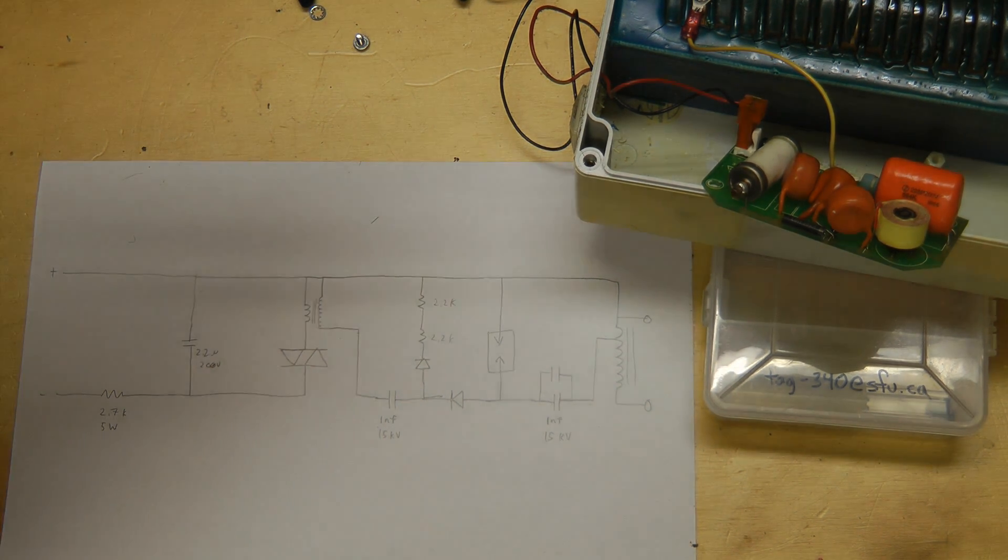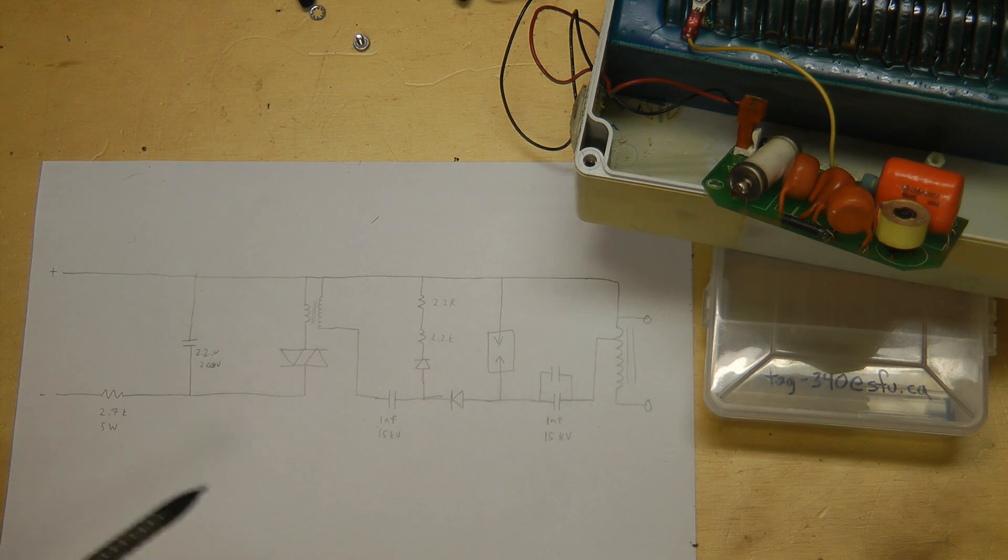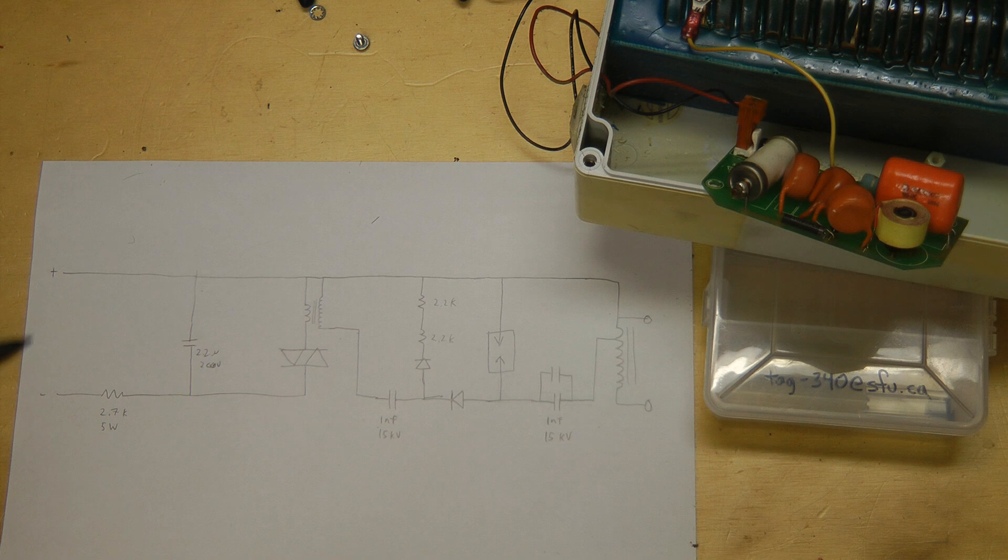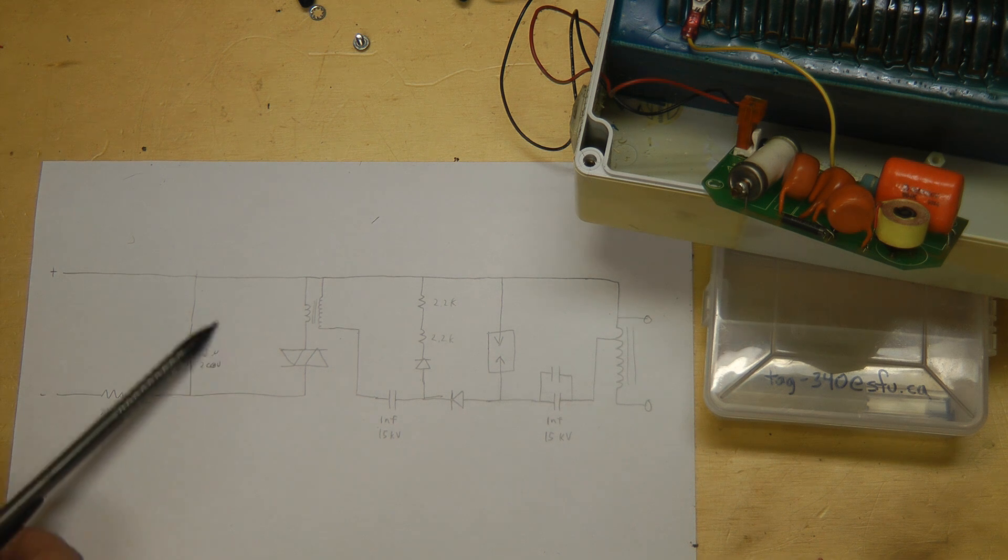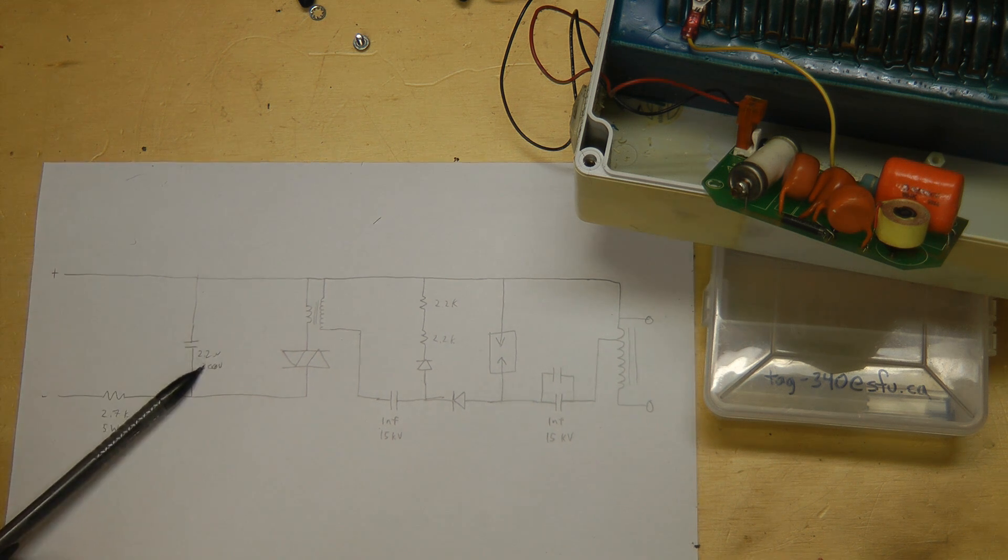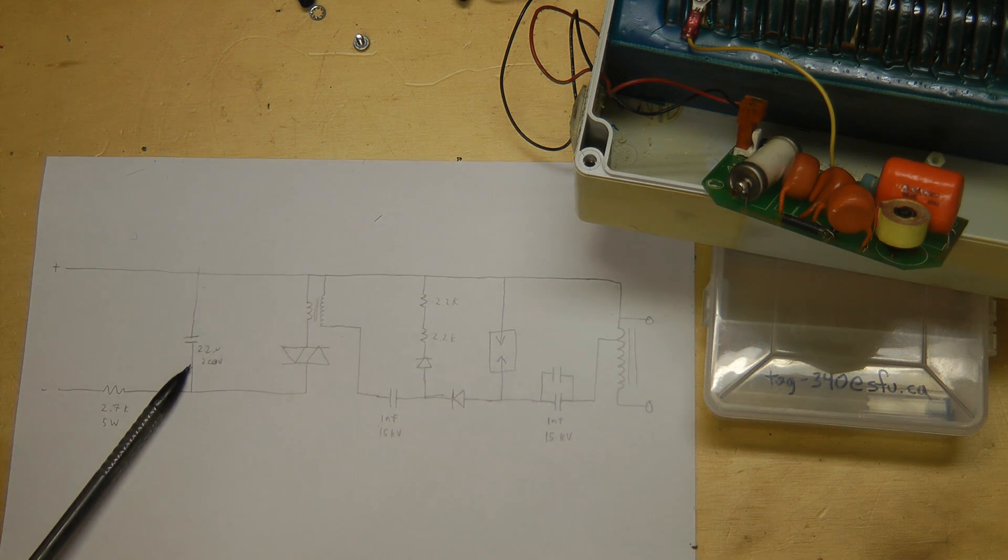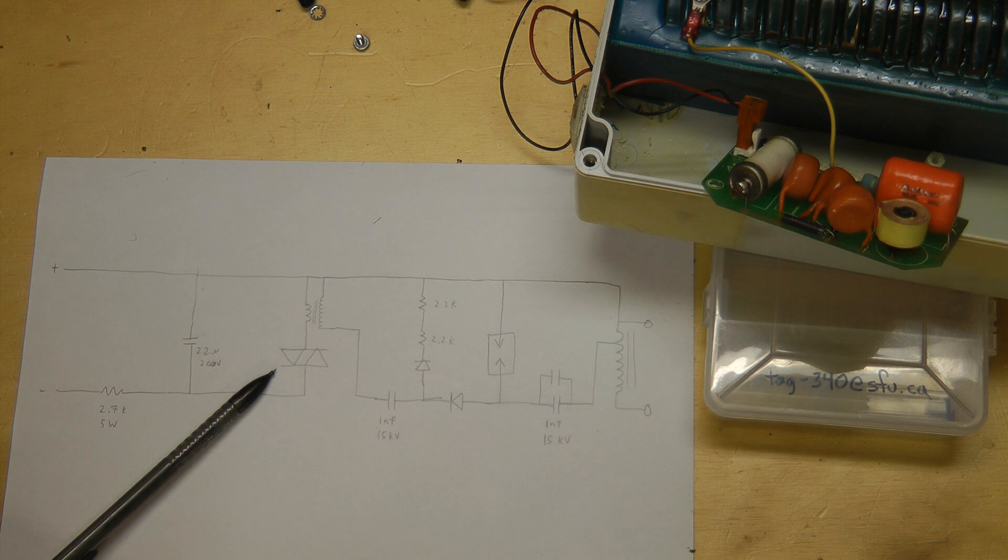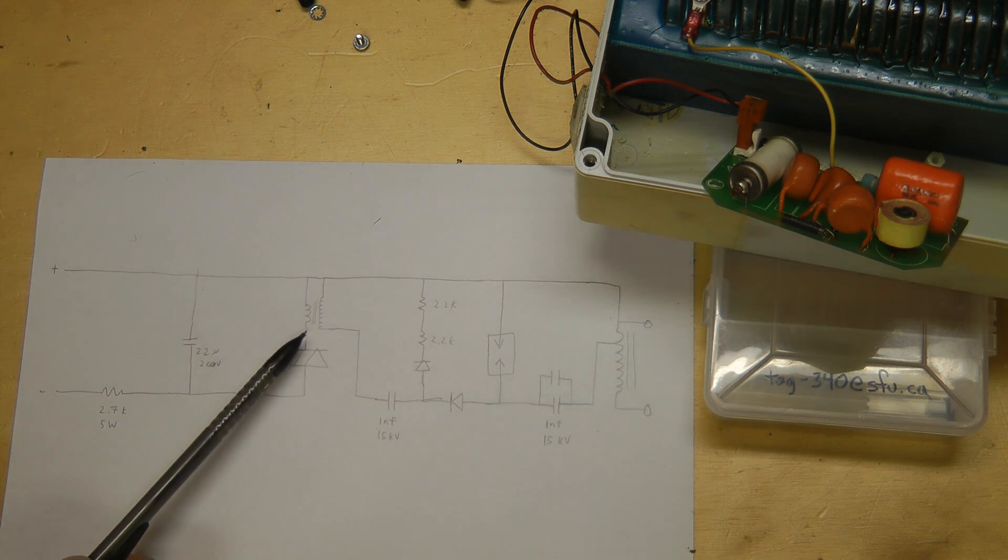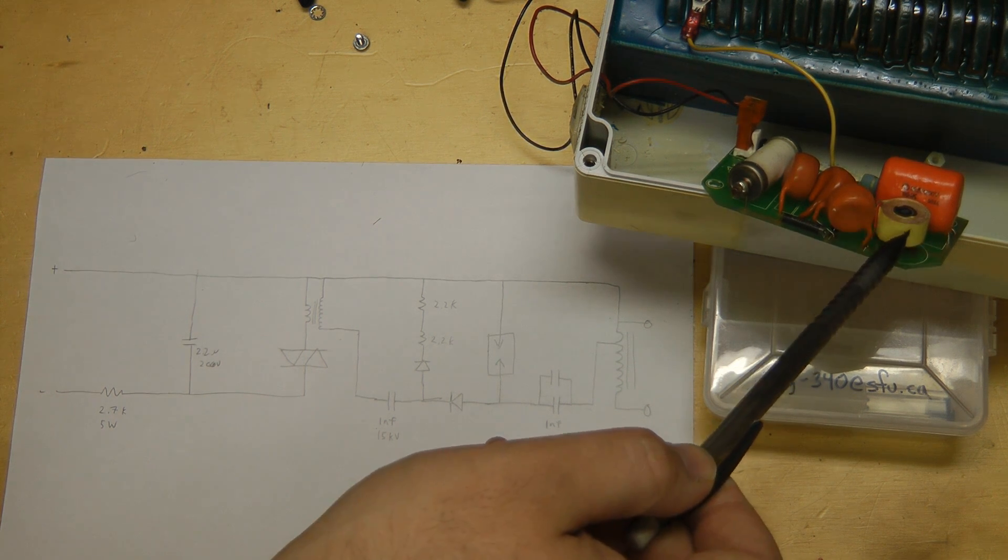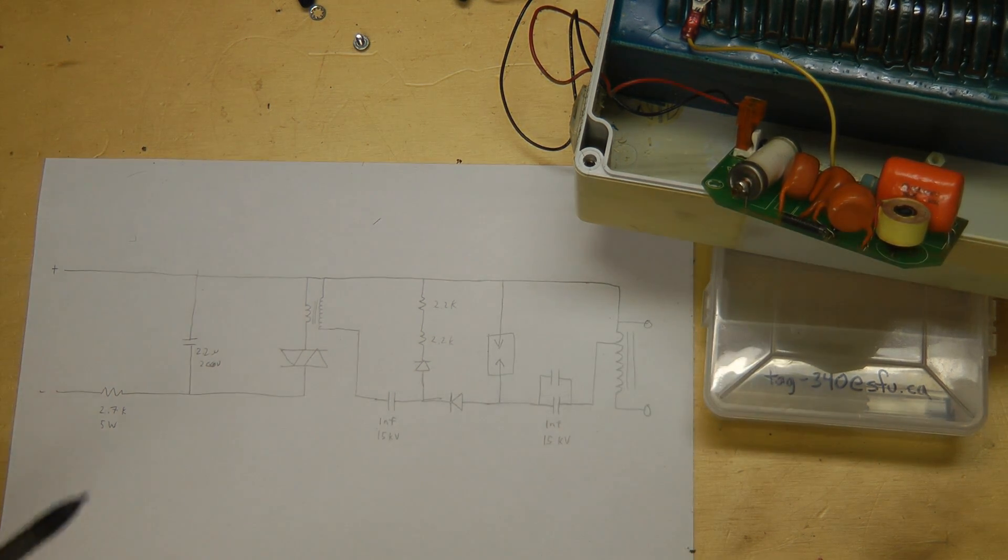I've traced out the circuit for this igniter. It's actually very, very simple. It's almost exactly like a Tesla coil, in fact. The input wires come in, go through a resistor and charge up a capacitor, 2.2 microfarad, 200 volt. When that capacitor charges up enough, this DIAC fires and dumps it into the primary of the transformer. That's this one right here, which looks basically like a xenon flash lamp trigger transformer.